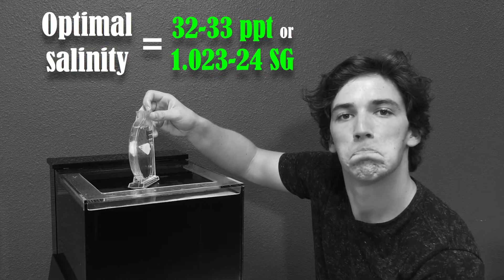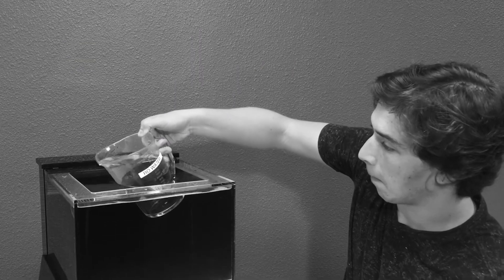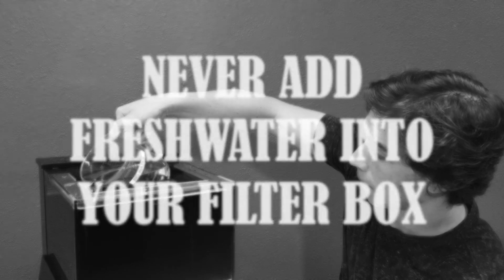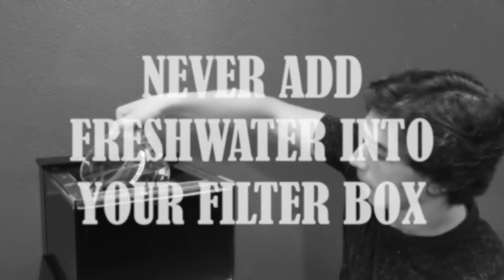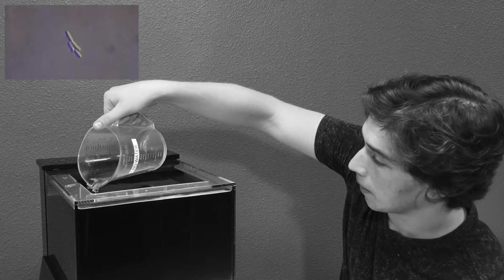You'll need to bring it down by adding reverse osmosis or distilled water. You can add fresh water to two places in your tank, the main viewing area or the sump. Never add fresh water into your filter box. This can kill all the tiny bacteria you've worked so hard to grow.